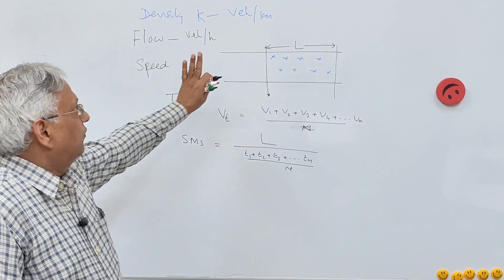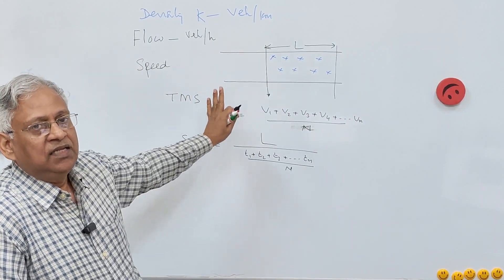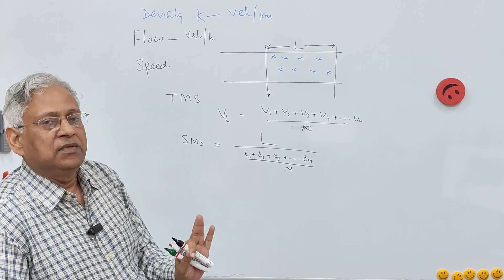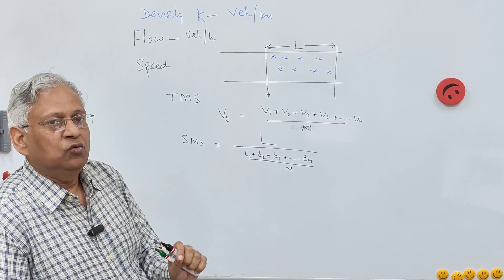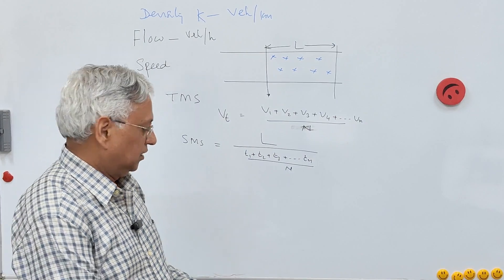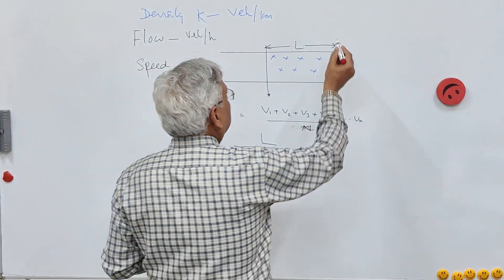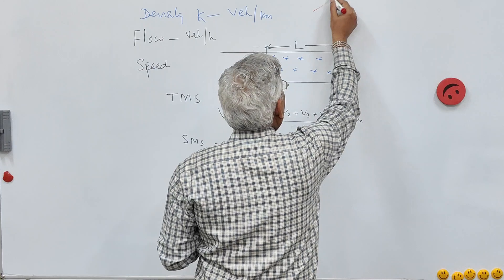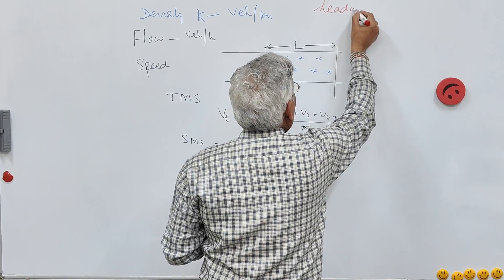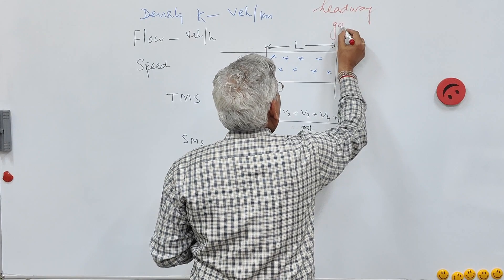These are the three fundamental flow parameters. In addition, there are two derived parameters which are also important: headway and gap.